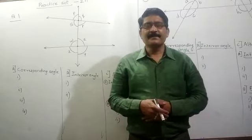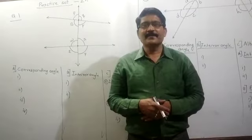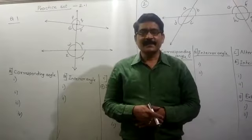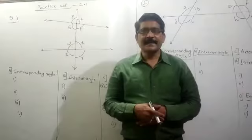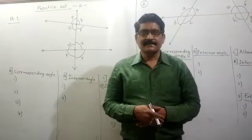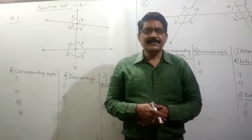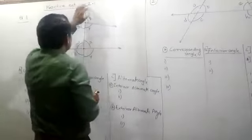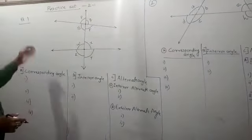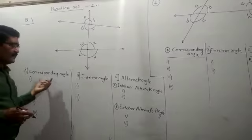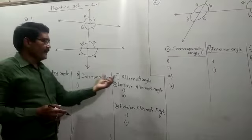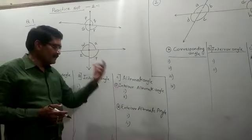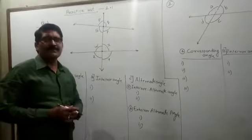In the previous lecture we saw how to identify corresponding angles, interior angles, and alternate angles. Now we start with exercise practice step 2.1. In the first question, you have to find out the pair of corresponding angles, pair of interior angles, and the alternate angles. I am giving all the angles and you have to search now.